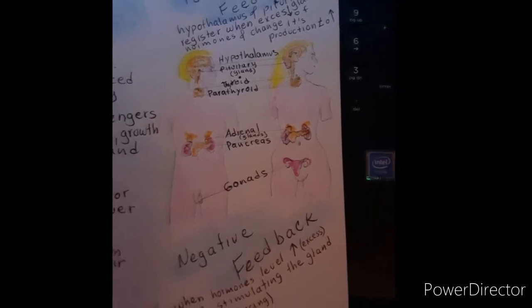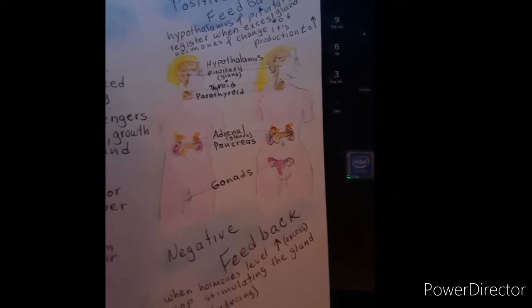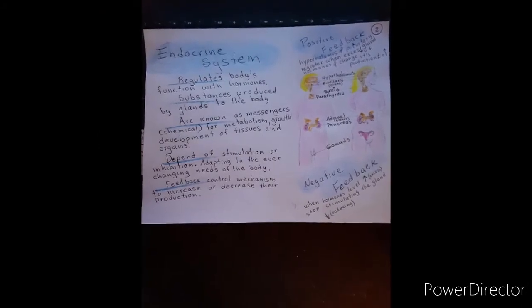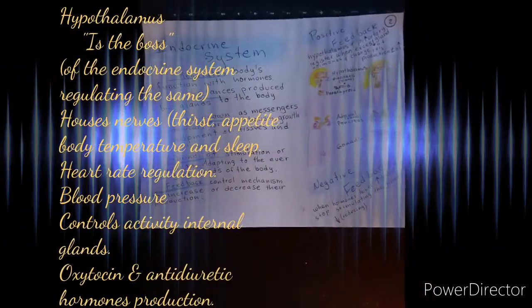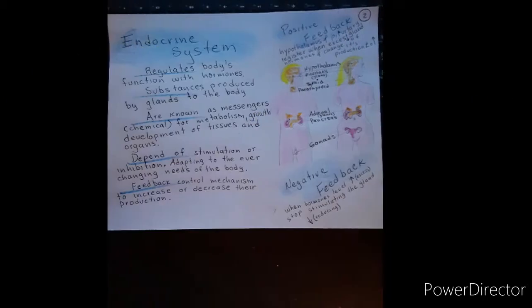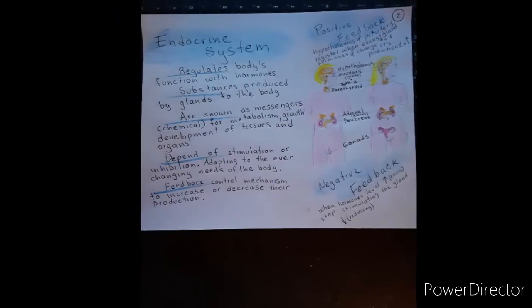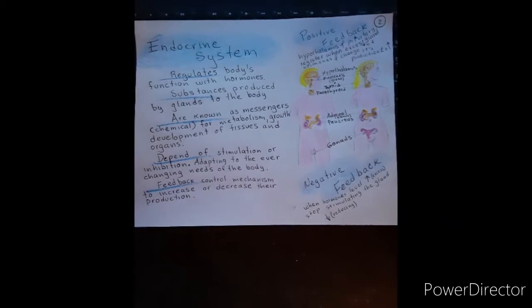The endocrine system regulates body function with hormones. El sistema endocrino está regulado en su función por hormonas. Substances produced by glands in the body. Sustancias que son producidas por el cuerpo por glándulas are known as messenger chemicals for metabolism, growth, development of tissues and organs.